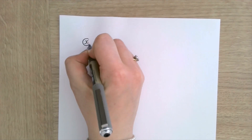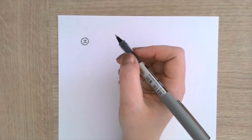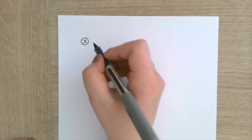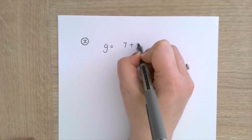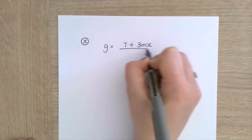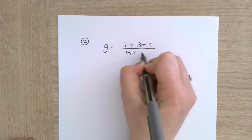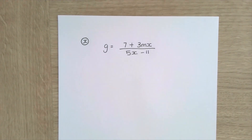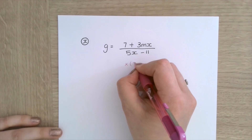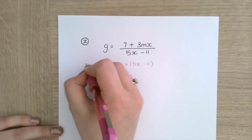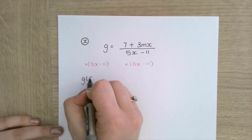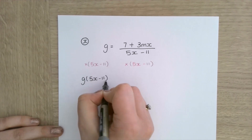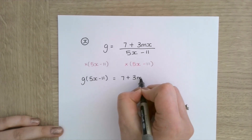Second to last one — actually, I've got three left, sorry. x is the subject I want to make this time. So g is equal to 7 plus 3mx all over 5x minus 11. Again, I'm going to multiply by my denominator, 5x minus 11. And that gives me g brackets 5x minus 11 is equal to 7 plus 3mx.